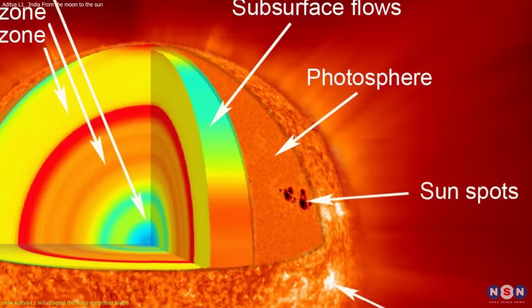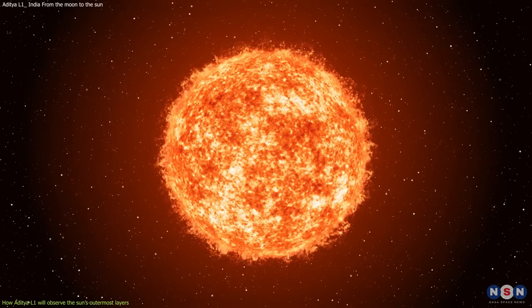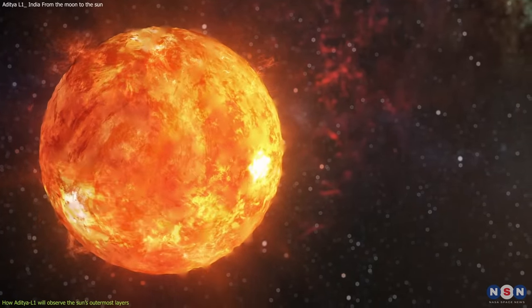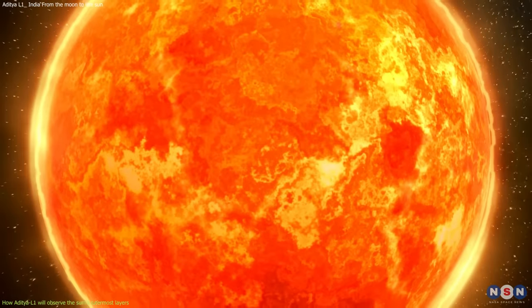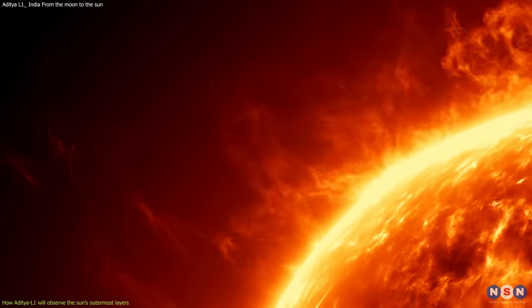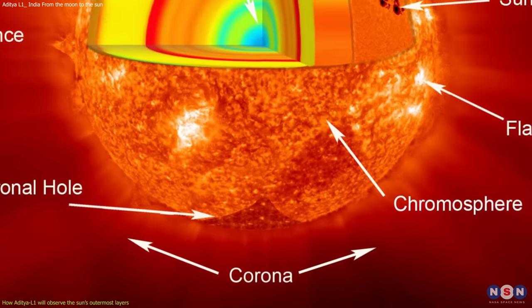The surface of the Sun is called the photosphere, which is what we see when we look at the Sun with our eyes or a telescope, and has an average temperature of about 6,000 degrees Celsius. But the Sun does not end at the photosphere. Above it are two more layers that are much hotter and more dynamic than the surface: the chromosphere and the corona.